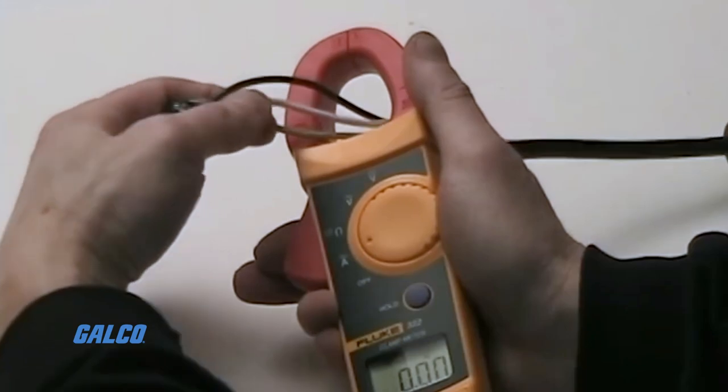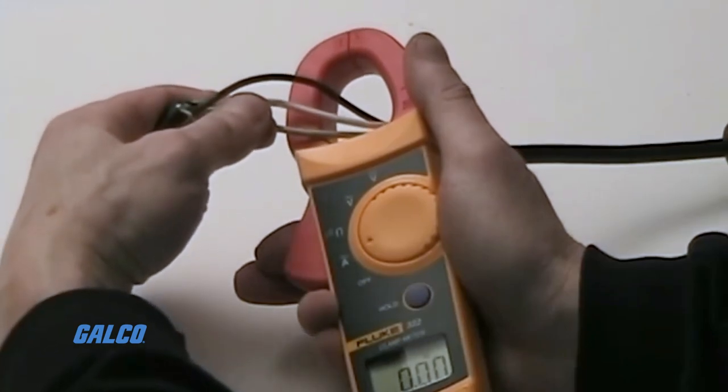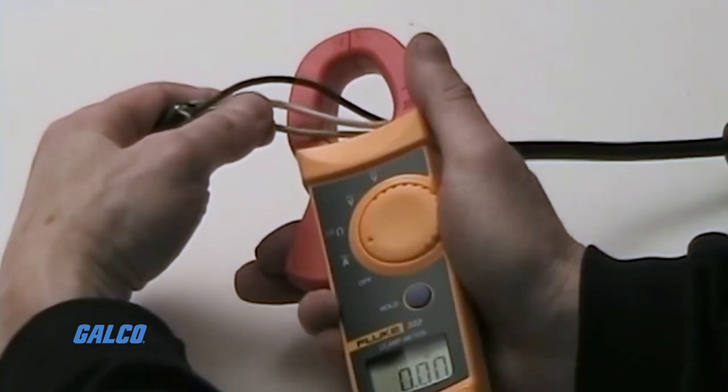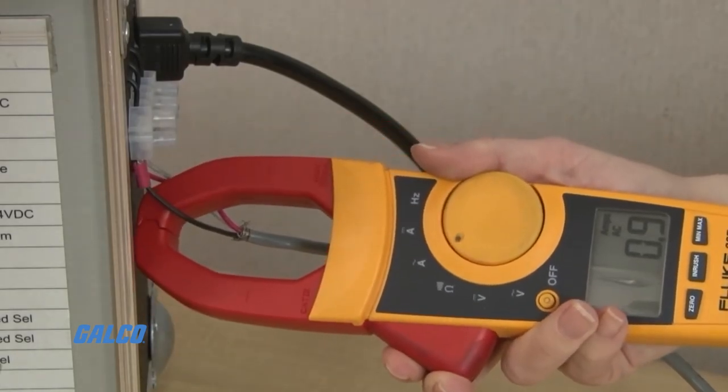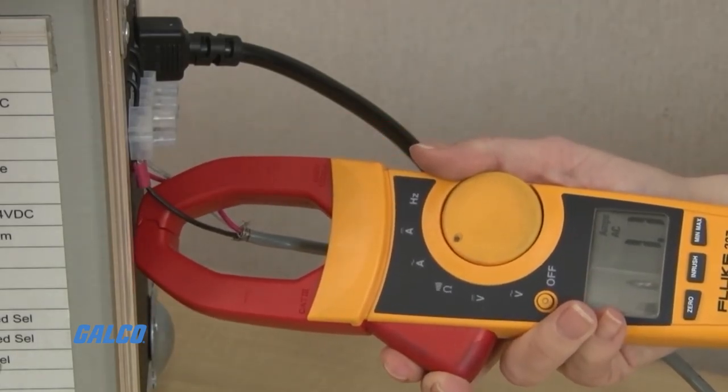So instead of getting a reading of 6 amps, you could get a reading of 0. Clamping around the hot wire or neutral wire in this case will give you the true current reading.